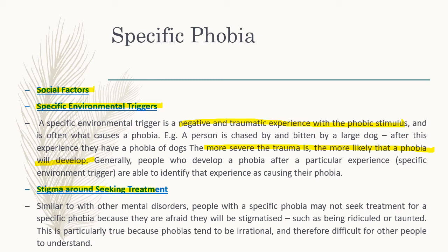There's also the stigma around seeking treatment. Many people with phobias are afraid to seek treatment because they're afraid of being stigmatized — laughed at, ridiculed, or taunted. People might say, 'Why are you afraid of a flower? Why are you afraid of a cloud? Why are you afraid of buttons?' These phobias exist, and they are excessive and irrational, which is why people are afraid to seek treatment. They don't ask for help because they know or think people will laugh at them, so they don't seek help.